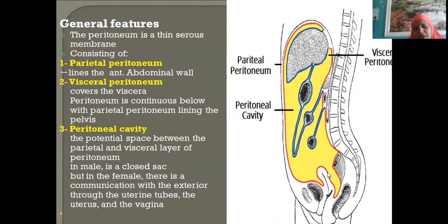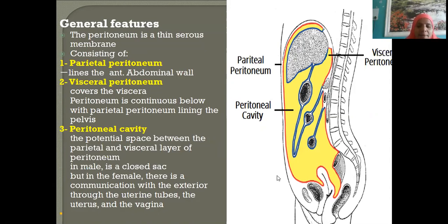The reason the peritoneal cavity is open at the fallopian tubes in females is to catch the ovum and bring it into the ampulla part of the fallopian tube to facilitate fertilization. In males, the peritoneal cavity is completely closed.